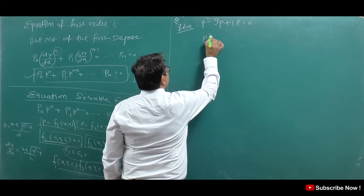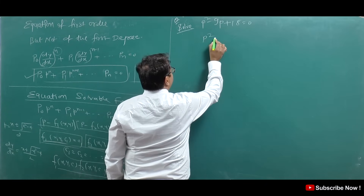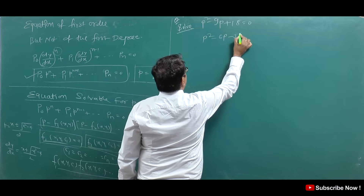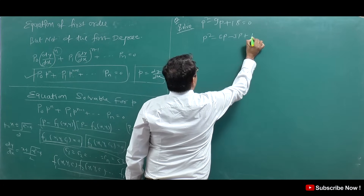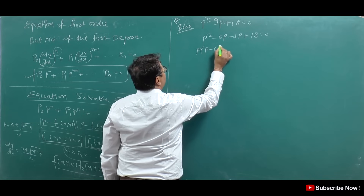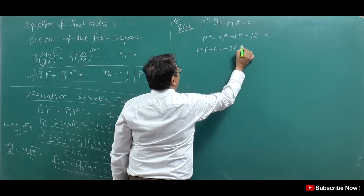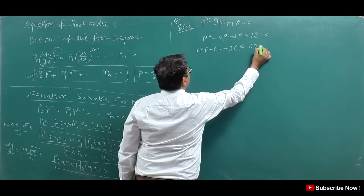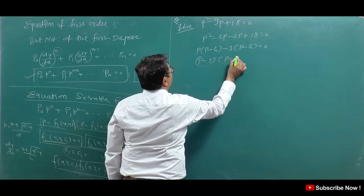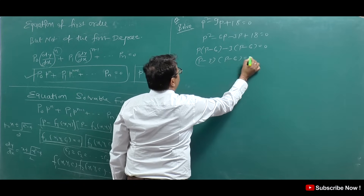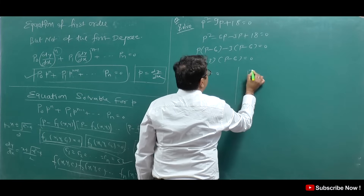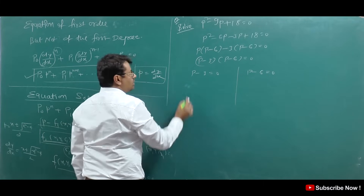We will factor p² - 9p + 18 = 0. We split -9p as -6p - 3p: p(p - 6) - 3(p - 6) = 0, giving (p - 3)(p - 6) = 0. So p - 3 = 0 or p - 6 = 0. Substituting p = dy/dx: dy/dx - 3 = 0 or dy/dx - 6 = 0.